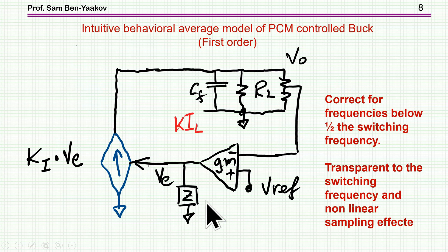So here is the model. We have a current source which is controlled by V_E. And then we have the GM amplifier from the output, comparing it to the V reference. And this is the phase compensation network. And this is, of course, the load. So this is very, very simple.